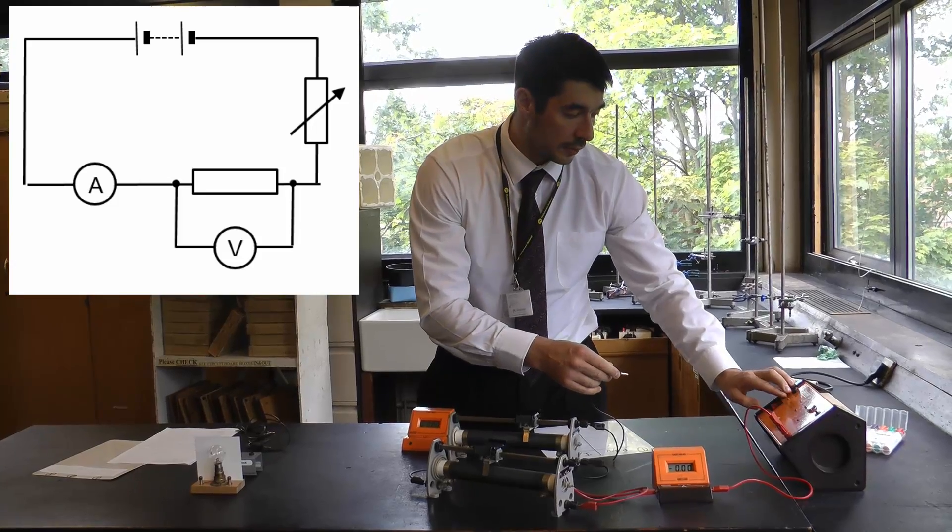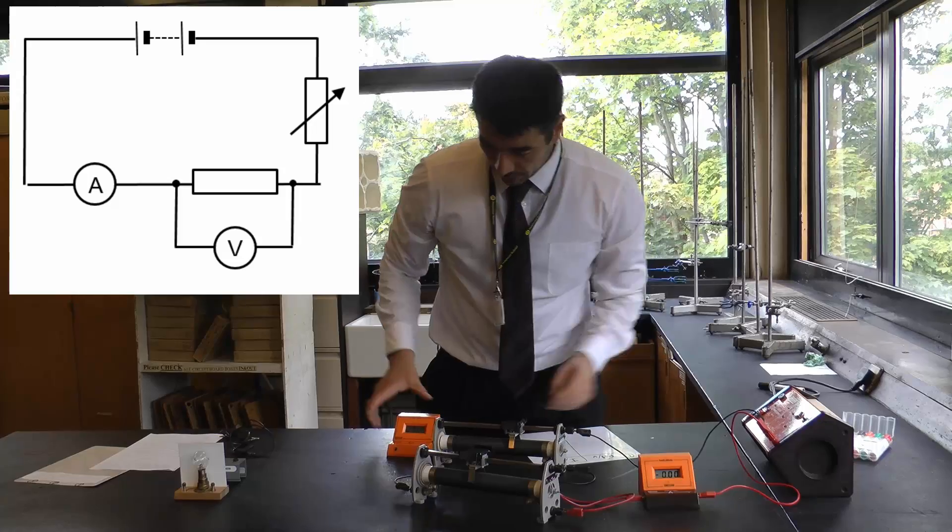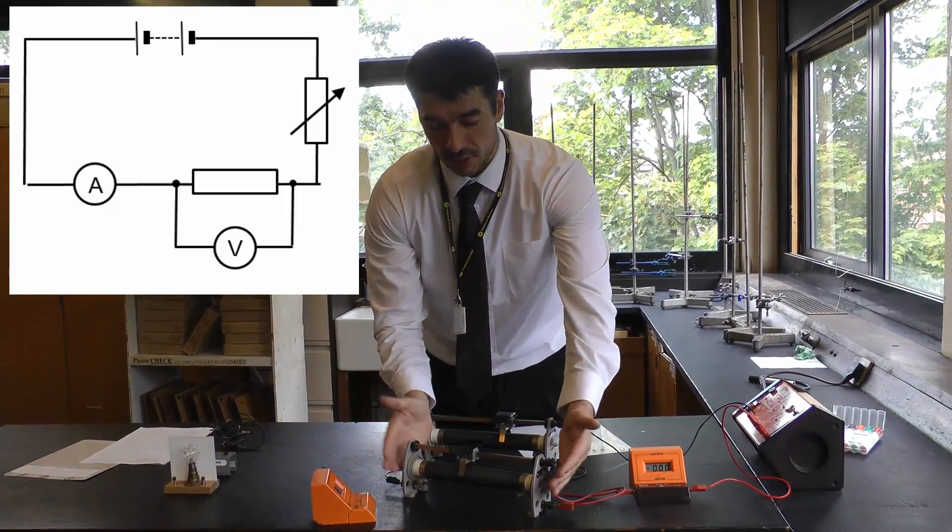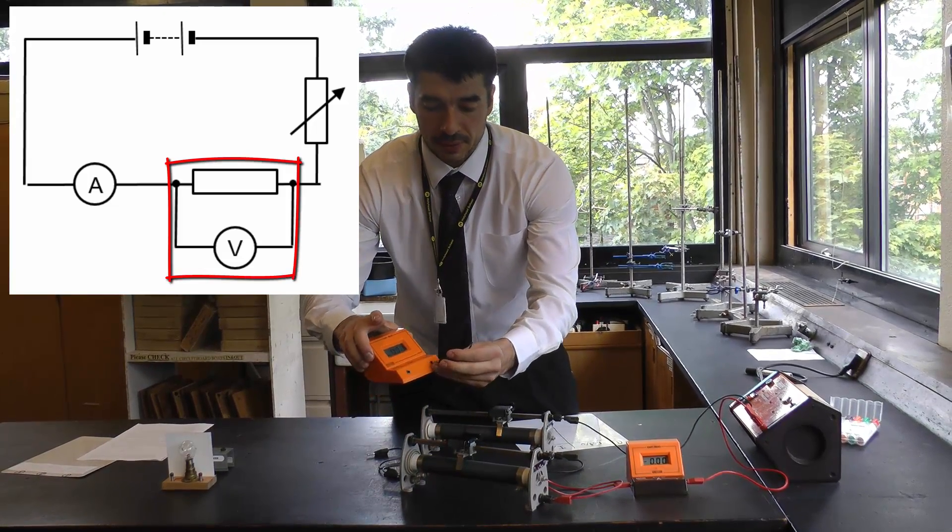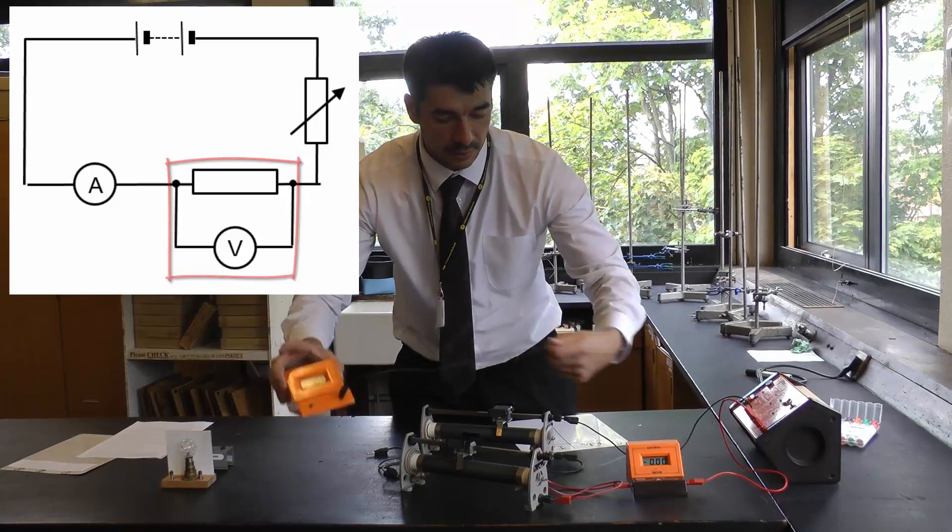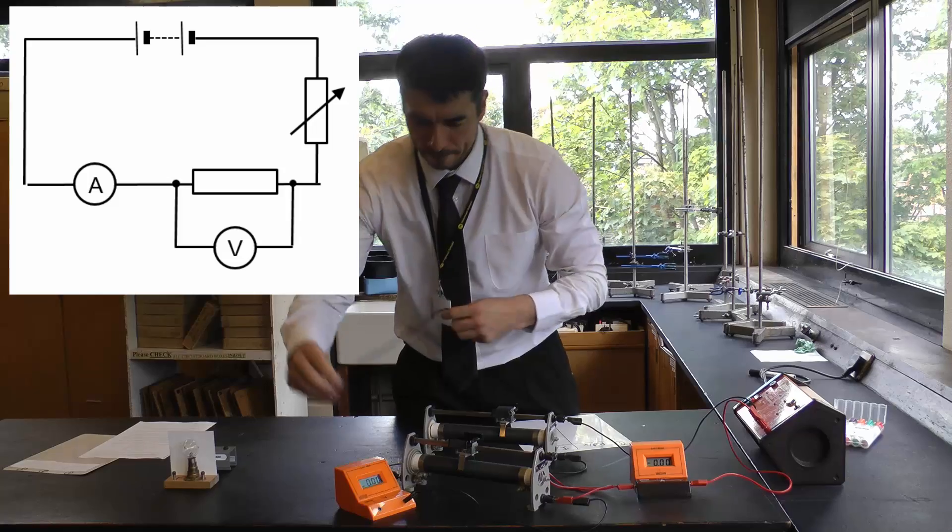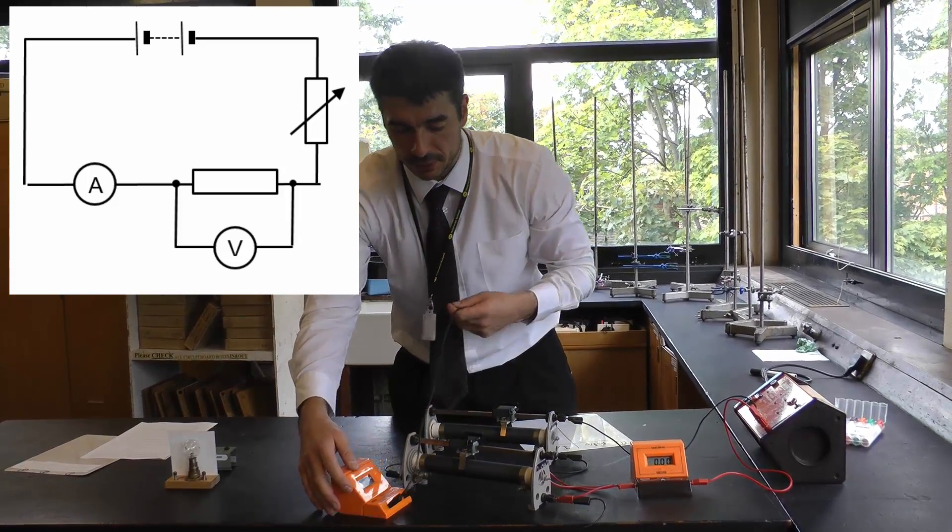The power pack is switched off, set to 12 volts, so nearly there. Now all I need to do is get the voltmeter in parallel across the test component. This side is the positive on the voltmeter, so it needs to go to the positive on this side. Now I'm measuring in parallel the voltage across this component.